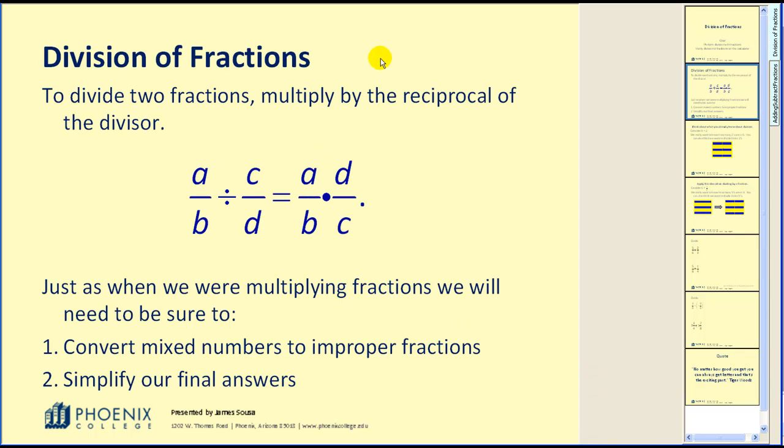Division of fractions. To divide two fractions, simply multiply by the reciprocal of the divisor. Notice how this is our division problem: a/b ÷ c/d. Instead of dividing by c/d, we will multiply by the reciprocal which would be d/c. Just as when we are multiplying fractions, we will need to be sure to convert mixed numbers to improper fractions and also to simplify our final answers.